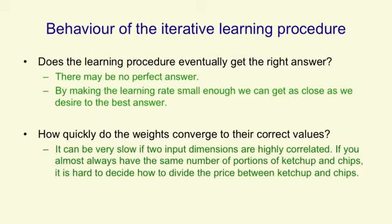If, for example, we always get the same number of portions of ketchup and chips, we can't decide how much of the price is due to the ketchup and how much is due to the chips. And if they're almost always the same, it can take a long time for the learning to correctly attribute the price to the ketchup and the chips.